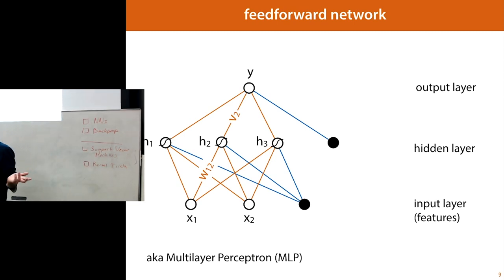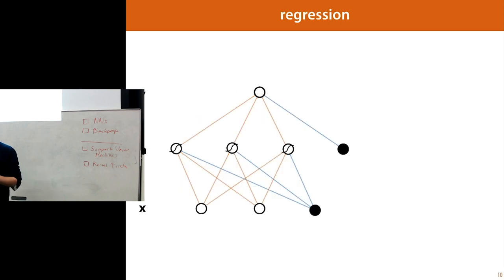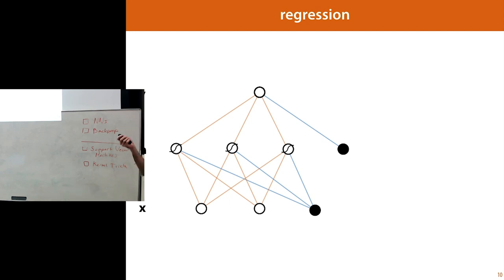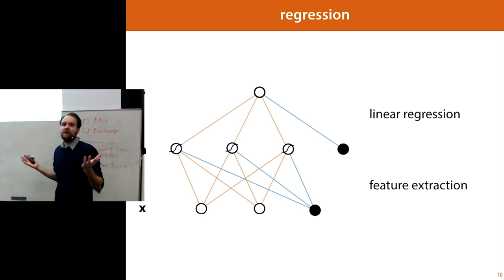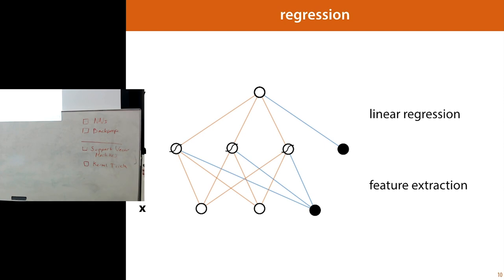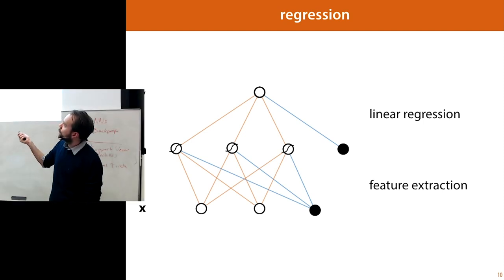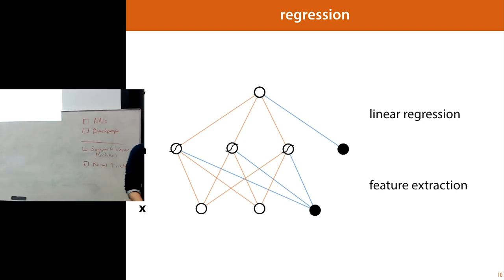We can now do machine learning with this — regression and classification. For basic regression, the output node should have any possible value between minus infinity and positive infinity, so it doesn't have an activation. The top part is just a linear regression function we've seen already. Below it, its inputs come from what we call a feature extraction layer — a normal linear regression function whose inputs are computed by another neural network layer.